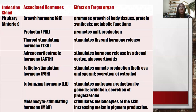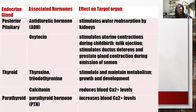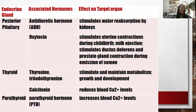For the posterior pituitary: ADH and oxytocin are produced by the hypothalamus and stored in the posterior pituitary. ADH stimulates water reabsorption by the kidneys. Oxytocin stimulates uterine contractions during childbirth and is also responsible for milk ejection — that reflex when a baby cries and milk lets down. It also stimulates the vas deferens and prostate gland contraction during the emission of semen.